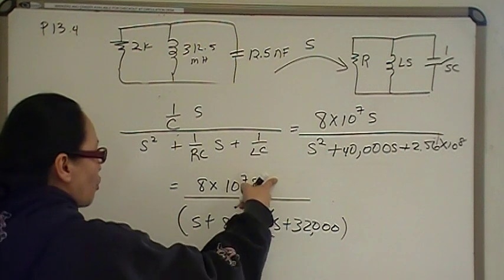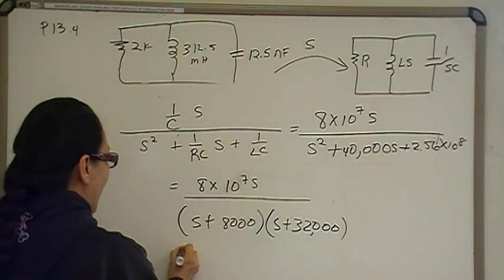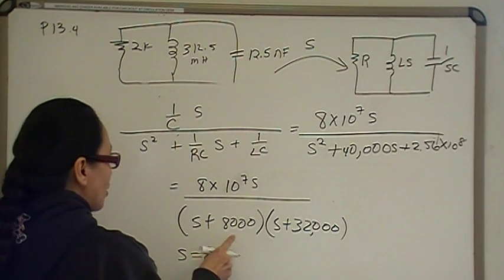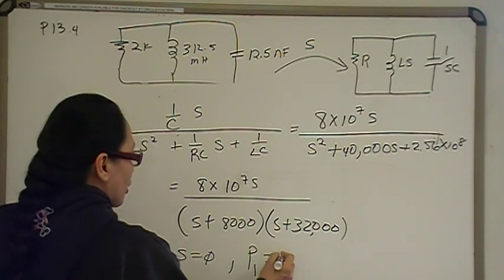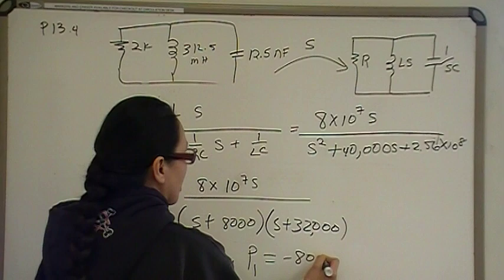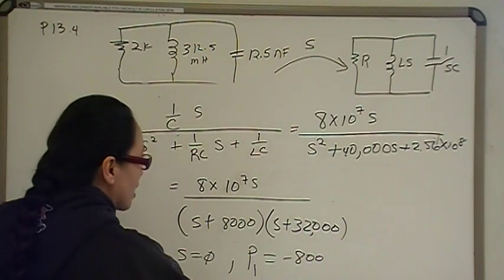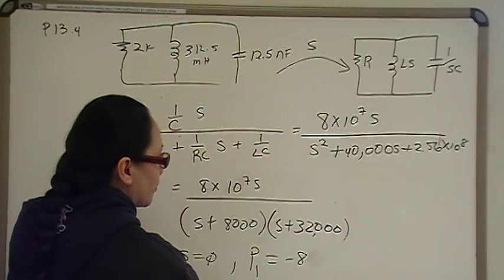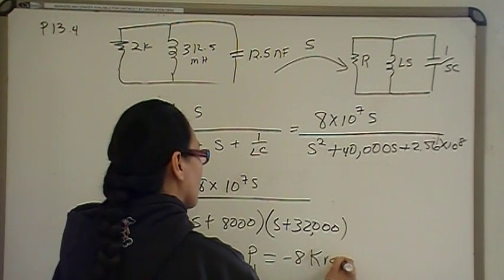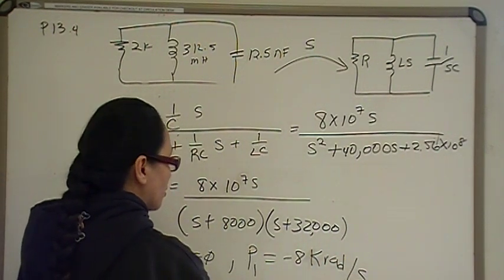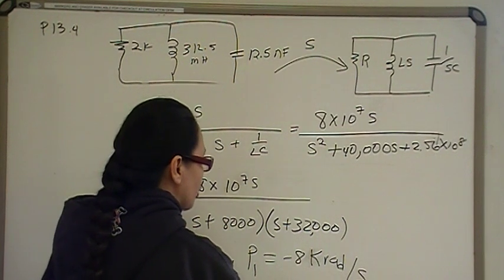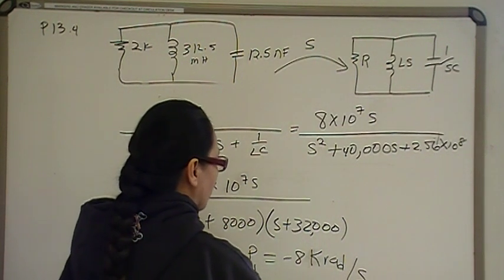So, for part B, you have one zero, which is at S equals zero, and then you have two poles, and this is going to be pole one, and it's going to occur at negative 8,000 kilorads, negative 8 kilorads per second. And then the other P2 is going to be at negative 32 k rad per second.